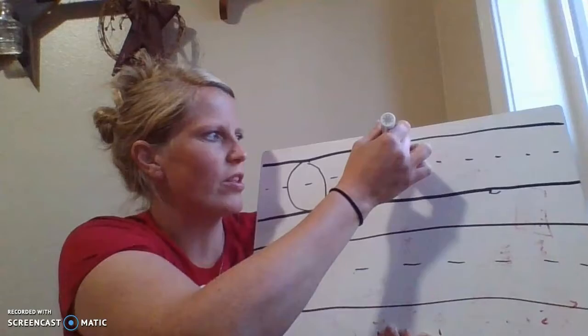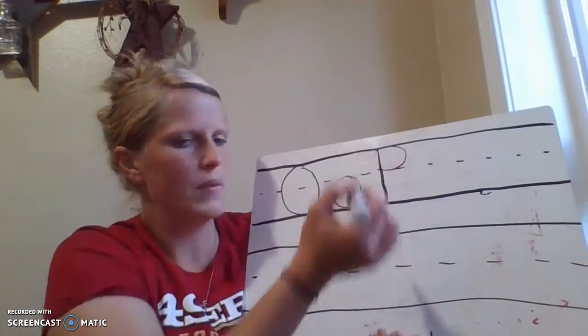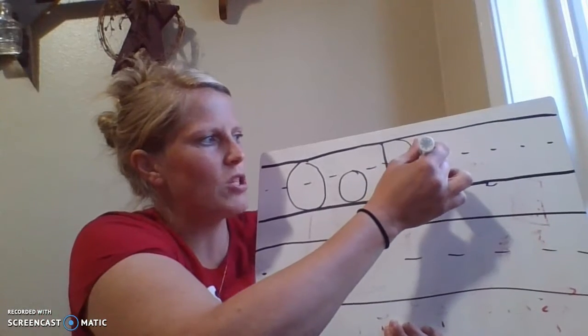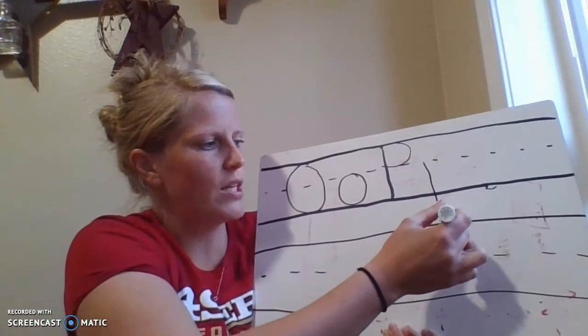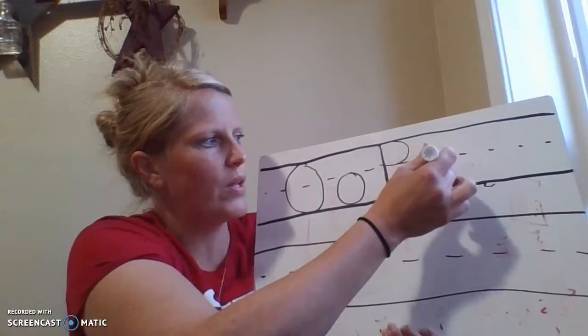For a big P, we start at the top, we do a straight line down, we frog jump to the top, and we give it a little bump. And then for a little P, we start in the middle, we do a straight line down all the way into the ocean, frog jump back up to the middle and then give it a bump.